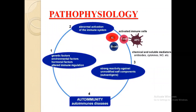Pathophysiology: there is abnormal activation of the immune system. Activated immune cells — T cells, B cells — produce chemical mediators and antibodies, cytokines, with strong reactivity against unmodified cell components called auto-antigens. Contributing factors include genetic factors, environmental factors, hormonal factors, and altered immune regulation, leading to autoimmune disorder.